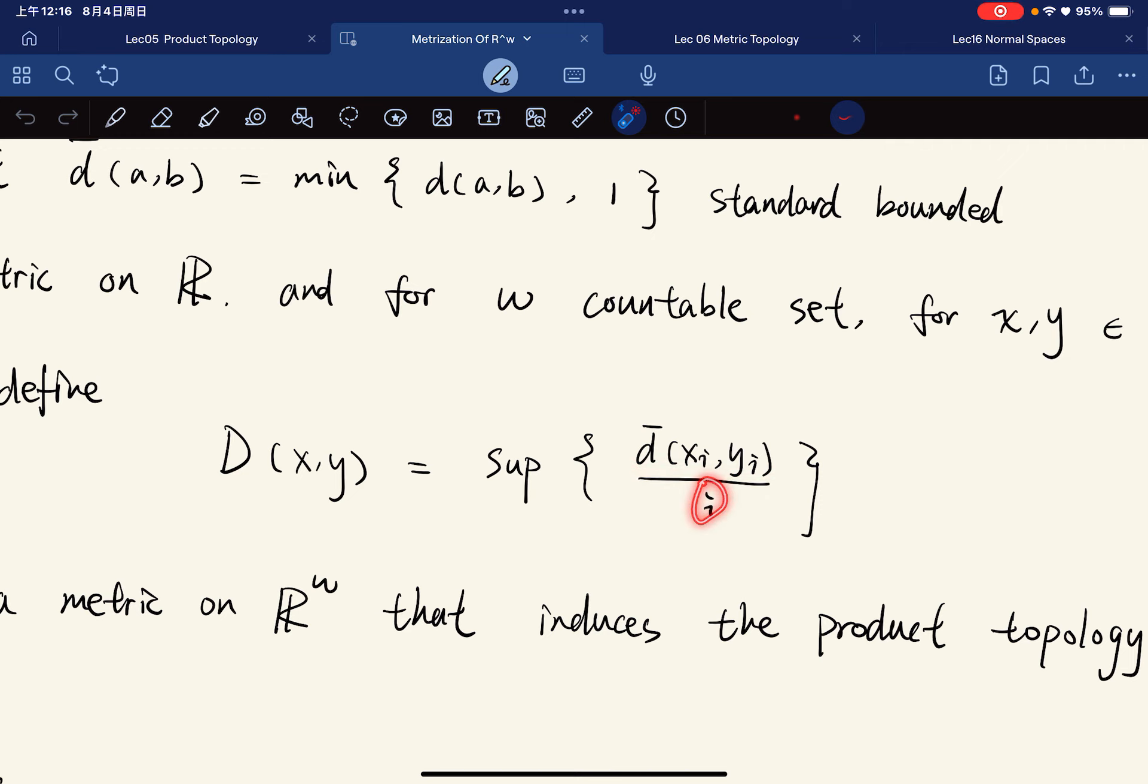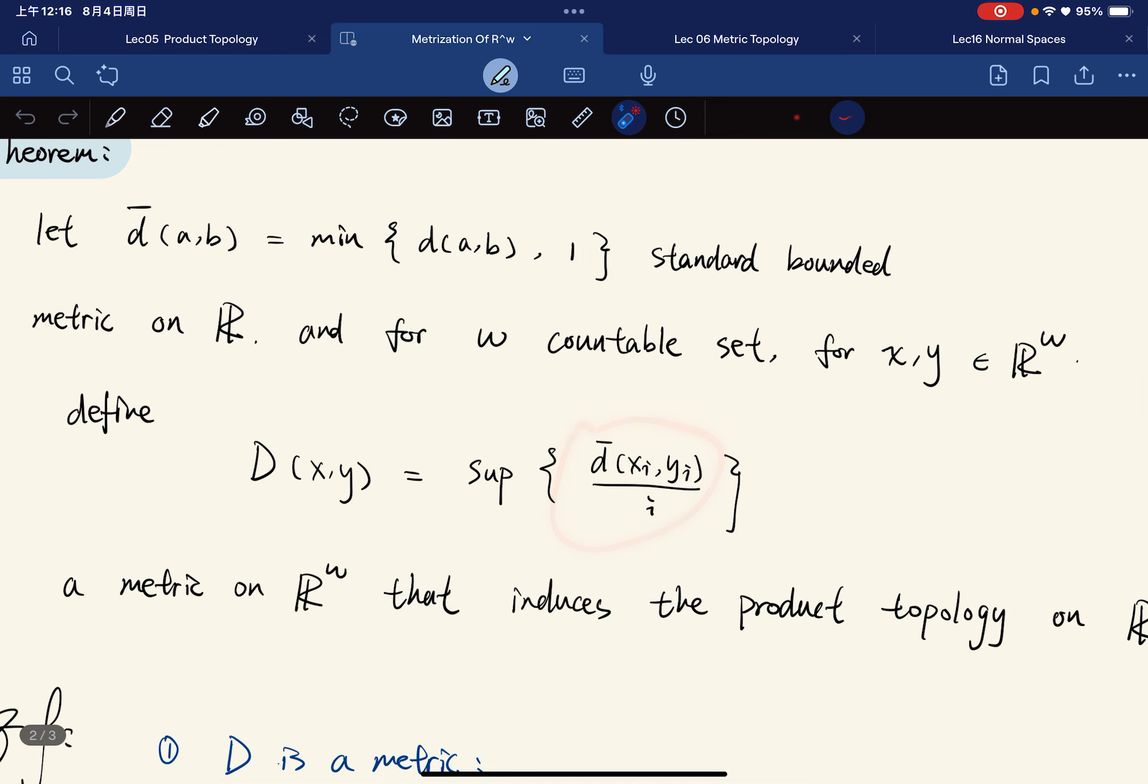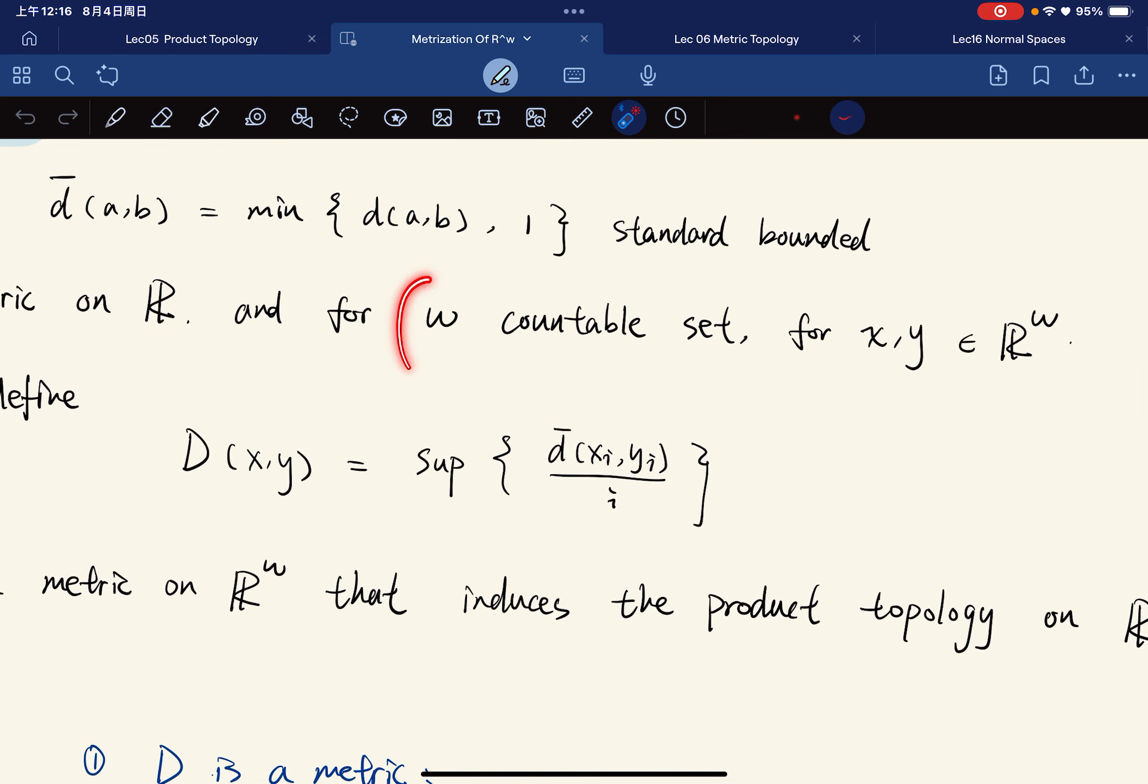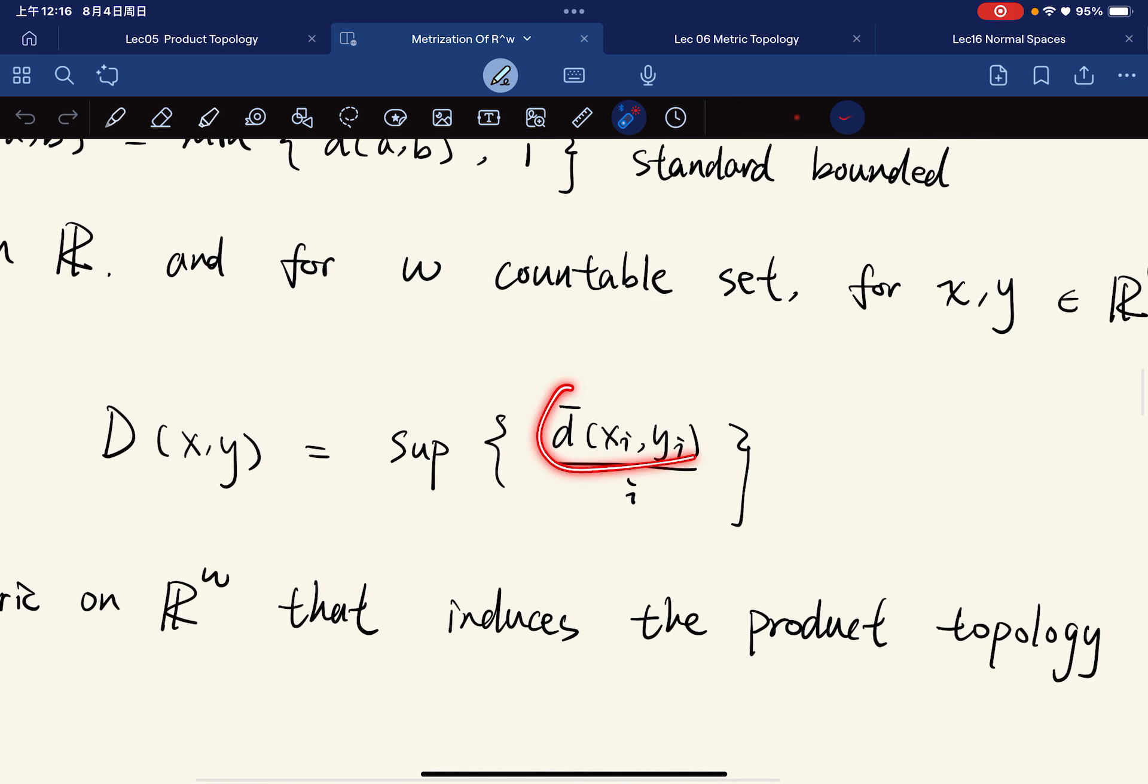Where the numerator is the standard bounded metric in each component, and we divide it by i. So this definition makes sense because ω is countable and this thing is always less than or equal to 1.